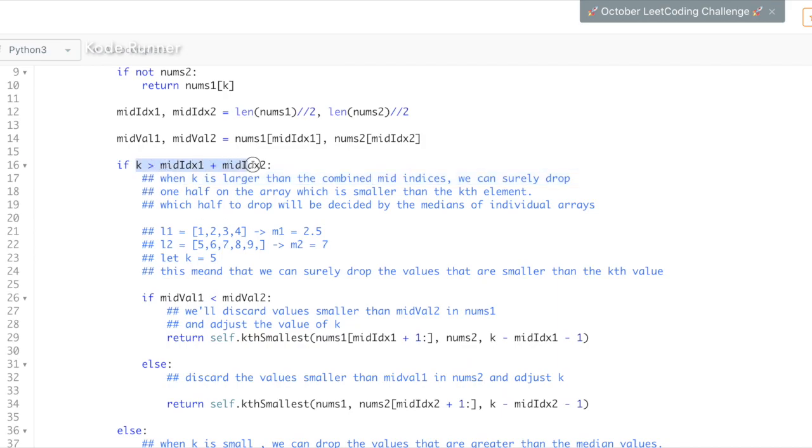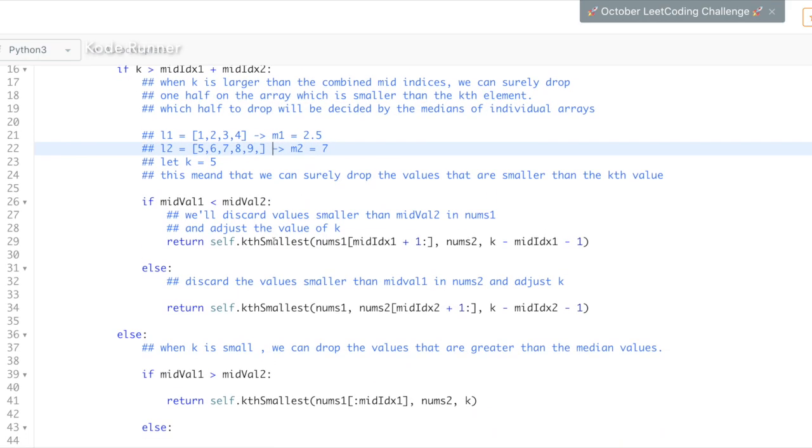This takes us to two cases that are possible. First is that k is larger than combined mid-indices. This means that we can surely drop one half of the array which is smaller than the kth element. Which half to drop is going to be decided by the medians of the individual arrays, which is specified in these if conditions and explained with comments.